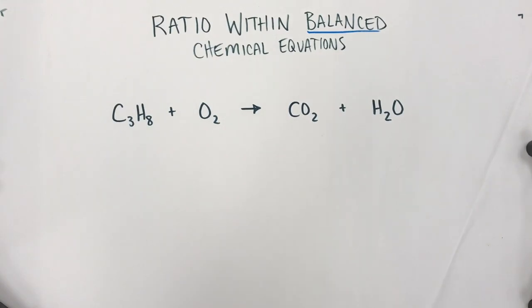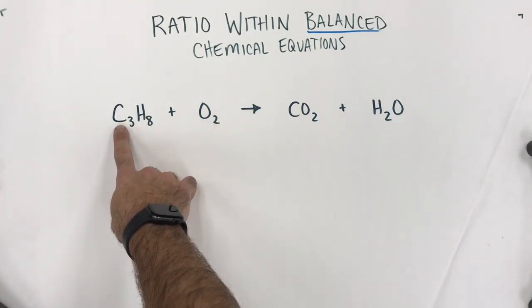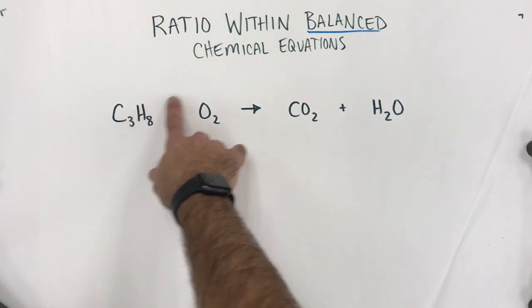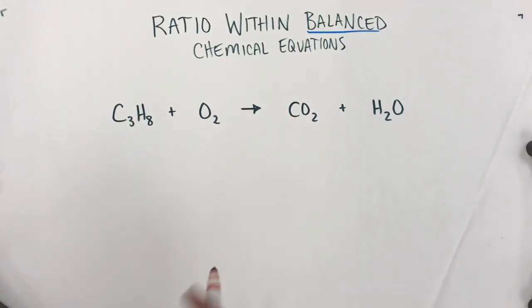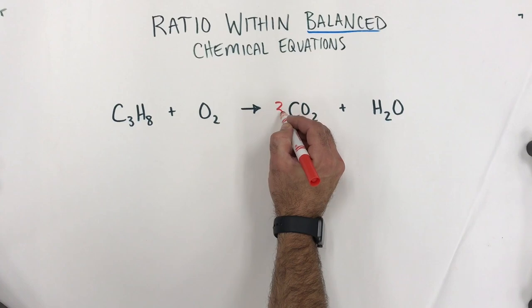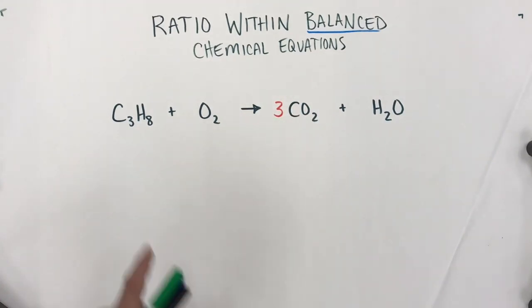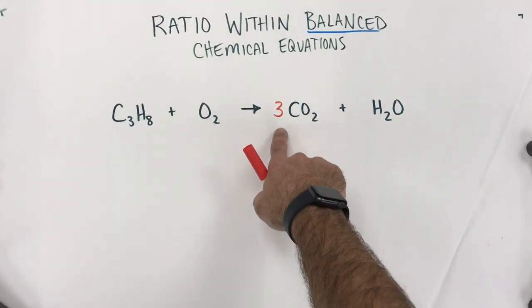Anyway, the concept of balancing. The only thing you can do when you're balancing is add coefficients. You cannot change subscripts. So, the first thing I like to mention is find the problem and if we start out by looking at carbon, so three carbon atoms before this reaction, all of a sudden only one. That's not going to work. So, we can put a three in front of this so that the three carbon atoms become three carbon atoms.